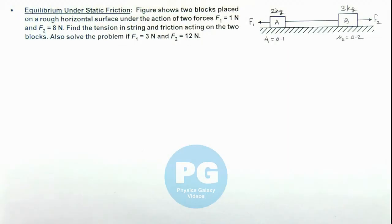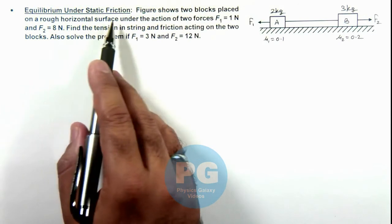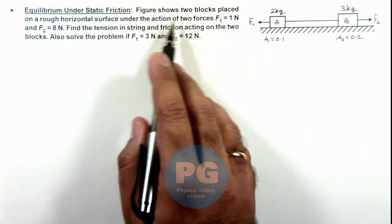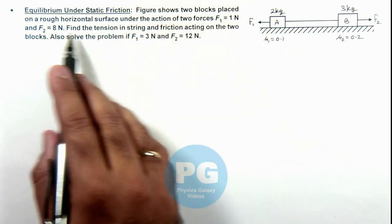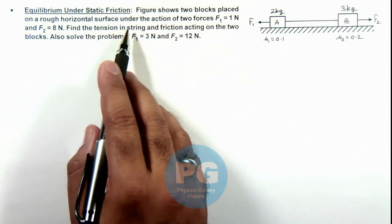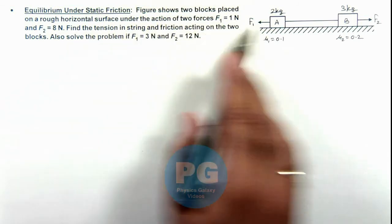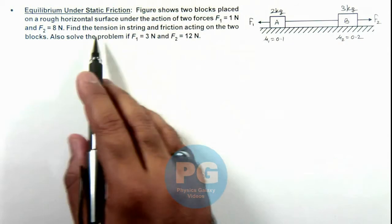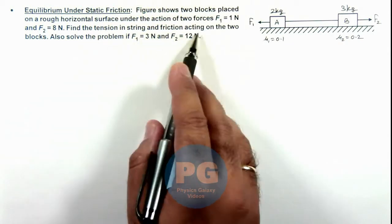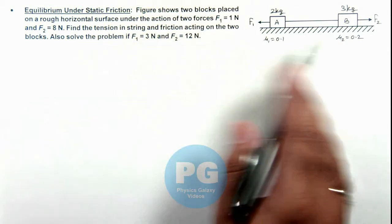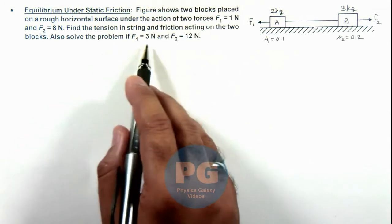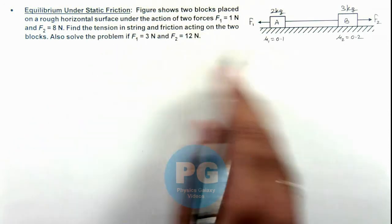This illustration is about understanding of equilibrium and static friction. Here we are given that the figure shows 2 blocks placed on a rough horizontal surface under the action of 2 forces F1 and F2. We are required to find the tension in the string and friction acting on the 2 blocks, and also to solve the problem when the values of F1 and F2 are changed.